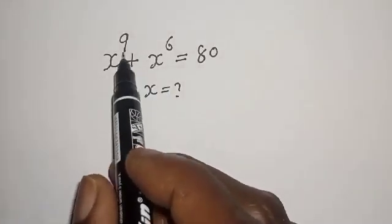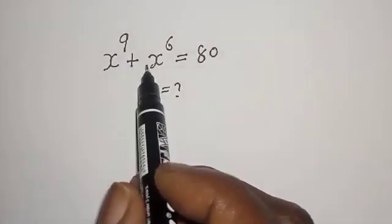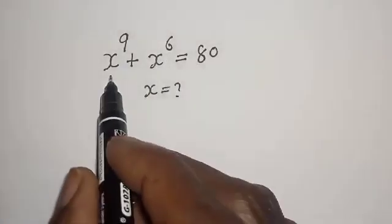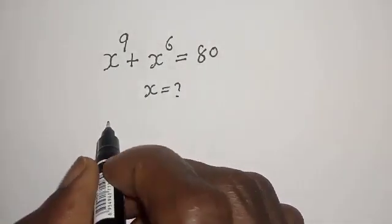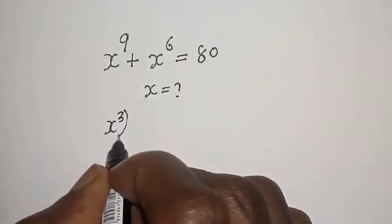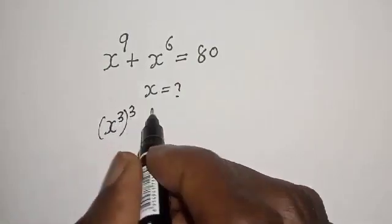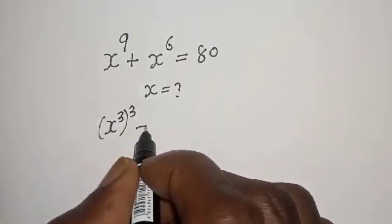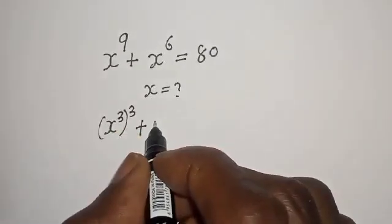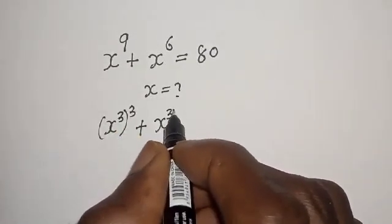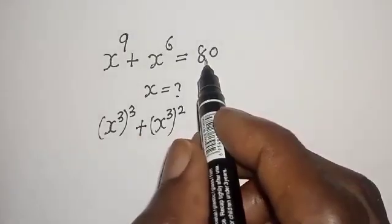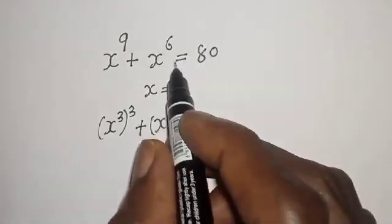Hello. How to solve s raised to power 9 plus s raised to power 6 is equal to 80. s raised to power 9 can be written as s raised to power 3, to the power of 3, plus s raised to power 6 can be written as s raised to power 3, squared.